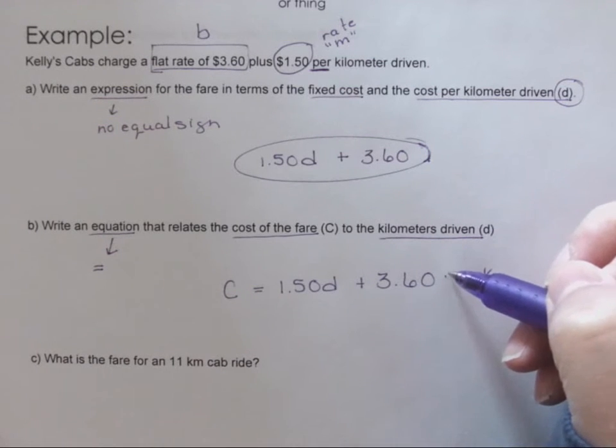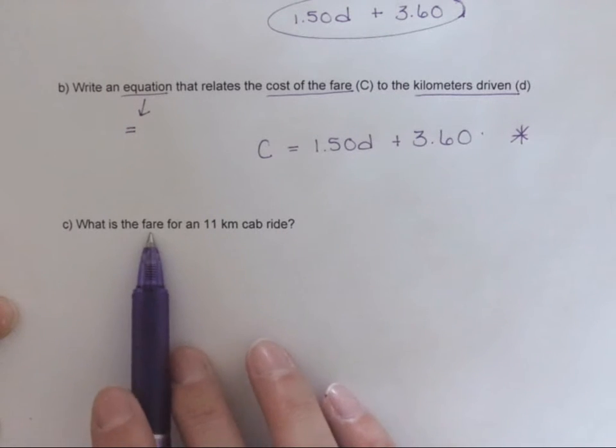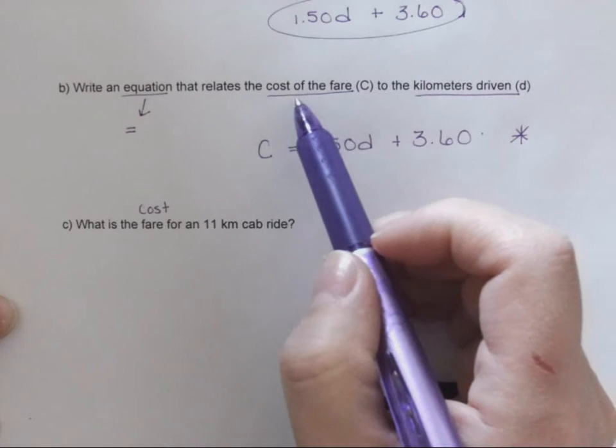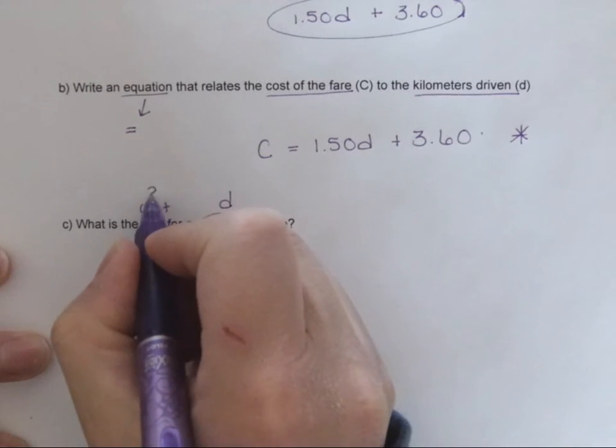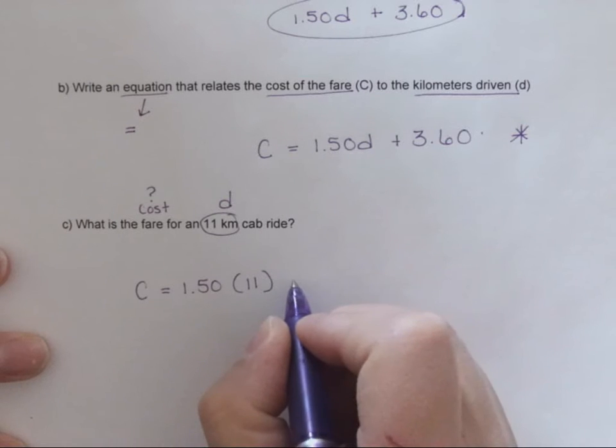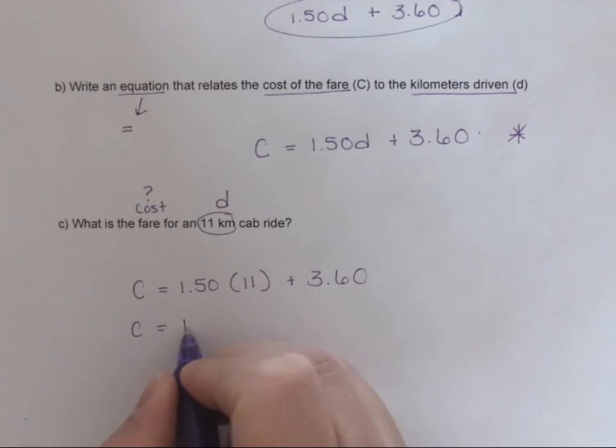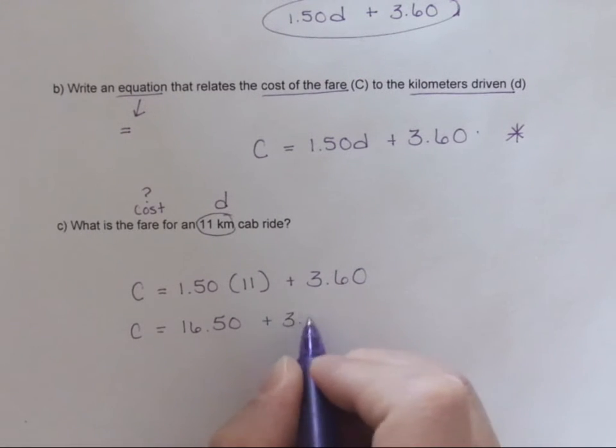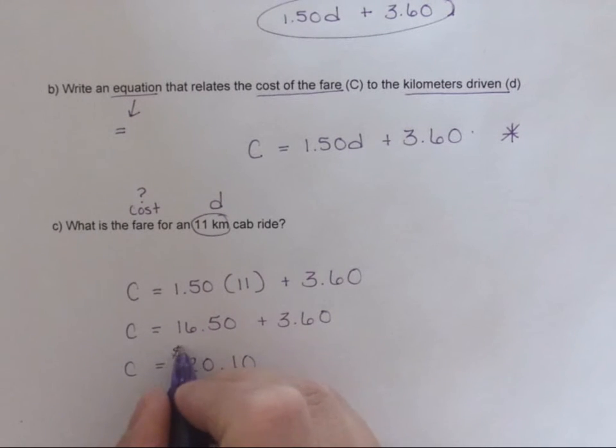Okay, so now it's asking me to do some math. Now that I have my formula, what's the fare? What's the cost? I'm just going to write down cost. What's the fare for an eleven kilometer cab ride? So this is my d value. I'm trying to find my cost so I don't know what it is, so c is equal to a dollar fifty times the eleven kilometers plus the three dollars and sixty cents. So most cabs when you hop into them, even before you go anywhere, they hit the button on their fare thing and it puts in an amount, and that's their flat rate. So c is equal to sixteen dollars and fifty cents plus 360, and that's going to give us twenty dollars and ten cents.